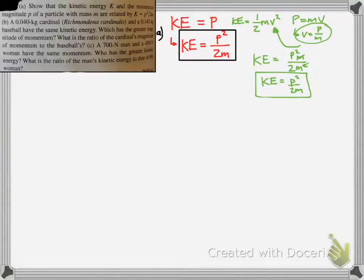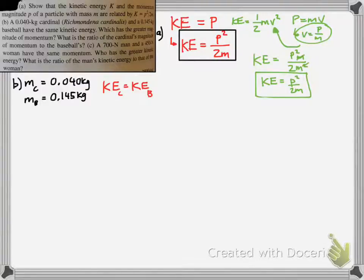Now we're going to actually use this equation for the next part. It wants us to compare a cardinal and a baseball to see if they have the same kinetic energy. Yes, they have the same kinetic energy, but based off momentum, which has greater momentum? Here's the masses: mass of the cardinal is mc, and mass of the baseball is mb.